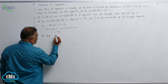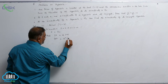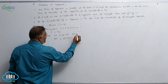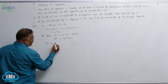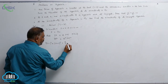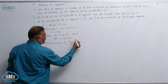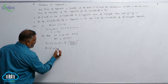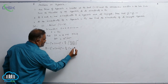By the conic definition, SP = e · PM, so SP² = e² · PM². Let P(x, y) be any point. Then (x - 1)² + (y + 3)² = e² · (9/4) · (y - 2)² / (0² + 1²). This gives (x - 1)² + (y + 3)² = (9/4)(y - 2)².